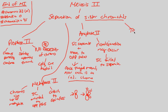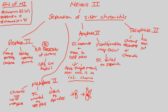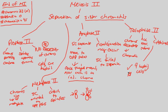Finally, telophase 2 is our last step. The chromosomes decondense — turning back into chromatin to restart the cycle. The nuclear envelope reforms. And then cytokinesis occurs. The key result of cytokinesis at the end of meiosis 2 is four unique, individual haploid cells. This was our goal, and we have reached it.